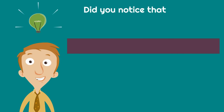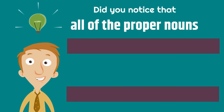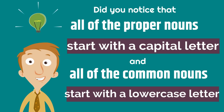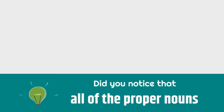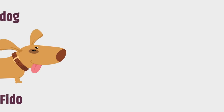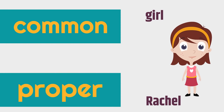Did you notice that all of the proper nouns start with a capital letter, and all of the common nouns start with a lowercase letter? Let's look back. Dog is common and it's lowercase, and Fido is the proper noun and it's uppercase — it's a capital letter. Girl is the common noun here, and Rachel is the proper noun, and Rachel starts with a capital letter. Proper nouns always start with a capital letter.